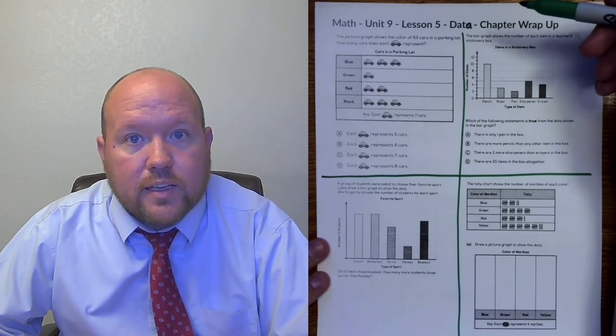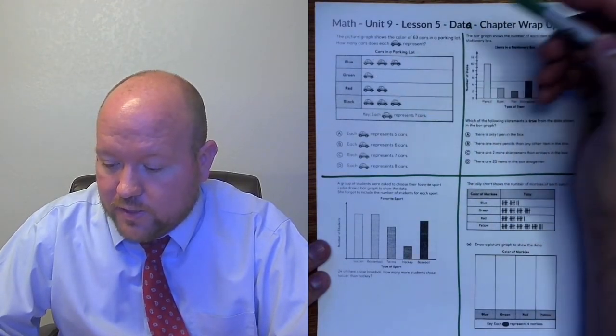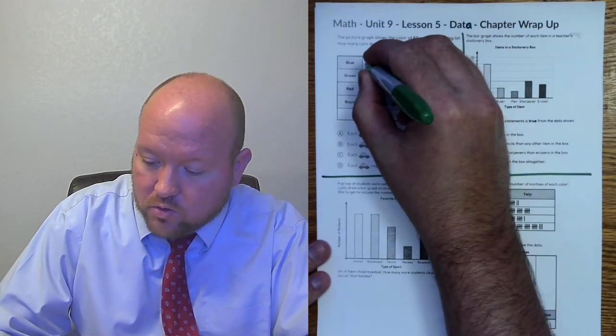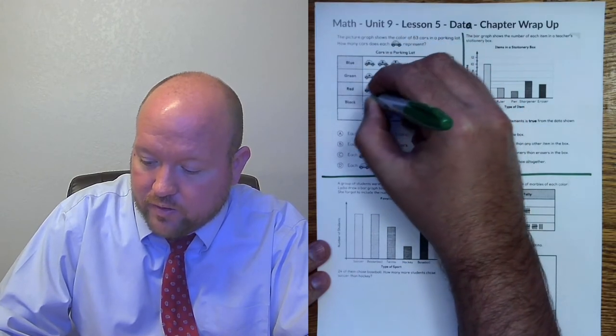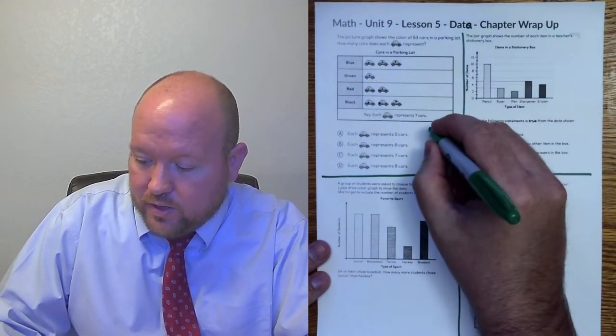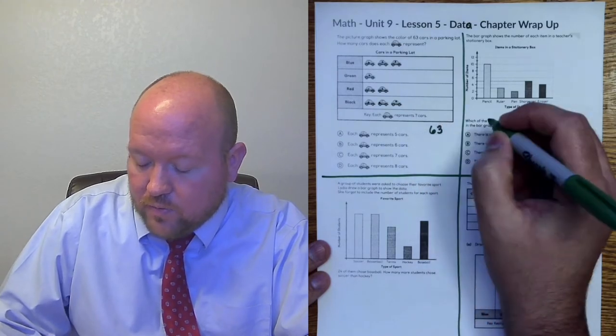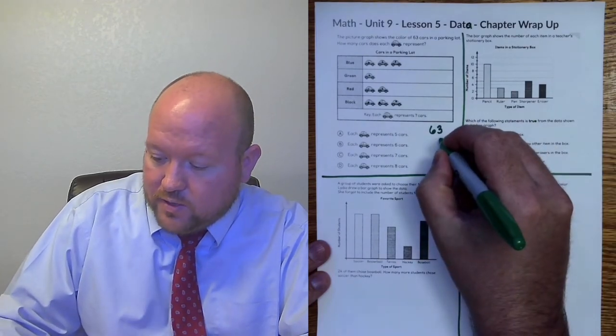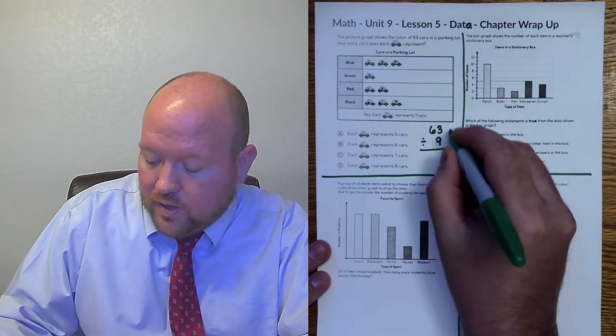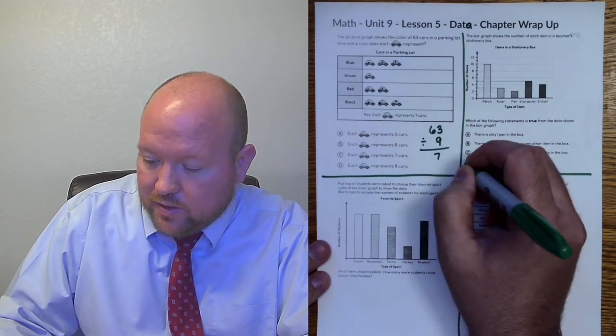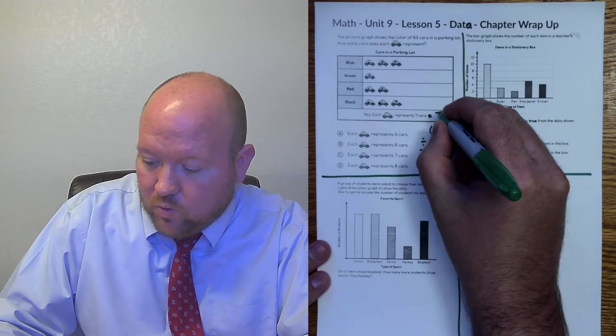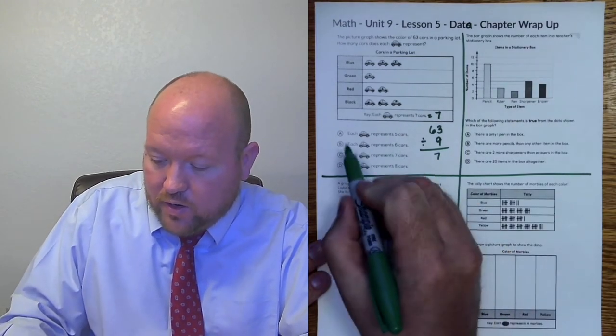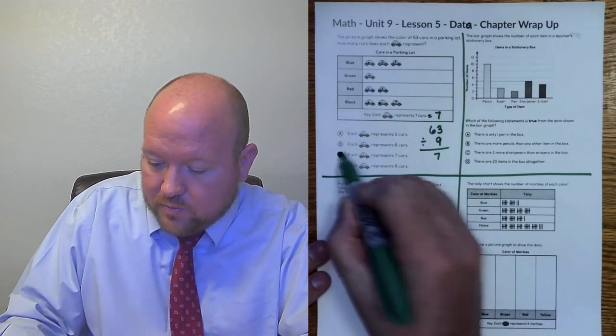What it's telling us is that all of these represent 63 as a total. So there's 63 cars all together. So we need to figure out how many there are. There is 1, 2, 3, 4, 5, 6, 7, 8, 9. So there's 63 cars all together. They're using 9 cars to represent it. What that means they're going to do here is divide by 9. 63 divided by 9 is 7. That means that each car is equal to 7 cars in real life that they're using here. So each car represents 7.